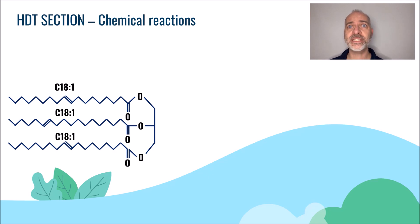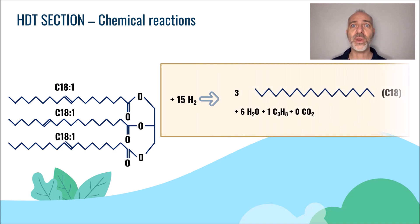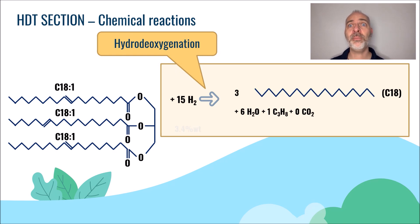The first reaction consists in letting 15 hydrogen molecules react with the triglyceride molecule. This reaction is called hydrodeoxygenation. This reaction consumes about 3.5 weight percent of hydrogen compared to the feed and leads to the formation of water for about 12 weight percent, propane for about 5 weight percent, and three saturated C18 molecules. The hydrogen molecules combine with each oxygen atom to produce water and saturate the three carbon-carbon double bonds. This reaction is the main reaction in the reactor.